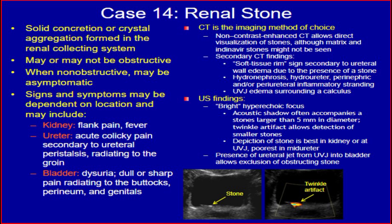Ultrasound findings include: number one, bright hyperechoic focus with acoustic shadow, often accompanying stones larger than 5 millimeters in diameter — twinkle artifact allows detection of smaller stones, and detection of stones is best at the kidney or ureterovesical junction, but poor in the mid-ureter; number two, presence of ureteral jet from the ureterovesical junction into the bladder allows exclusion of an obstructing stone.